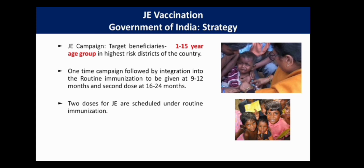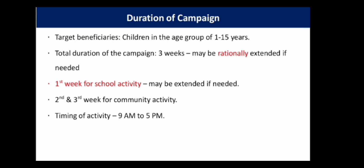The Japanese Encephalitis vaccination campaign targets beneficiaries aged 1 to 15 years in the highest-risk districts of the country. A one-time campaign is conducted, followed by integration into routine immunization: the first dose is given at 9 to 12 months and the second dose at 16 to 24 months — two doses of vaccine scheduled under routine immunization. The total campaign duration is 3 weeks, possibly extended if needed: one week for school activity and the second and third weeks for community activity.